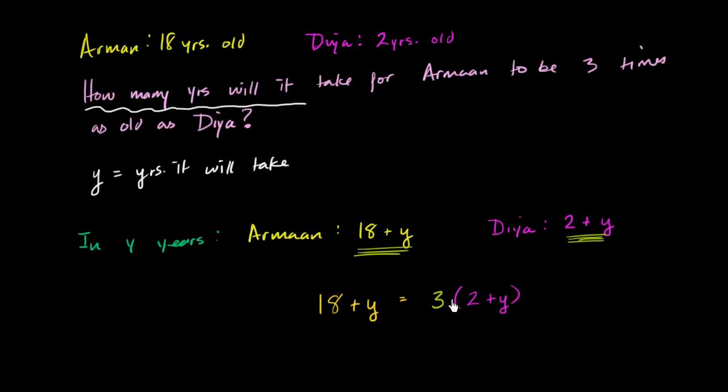Notice, this is Armand in y years. This is Dia in y years. And we're saying that what Armand is going to be in y years is three times what Dia is going to be in y years. So we've set up our equation.